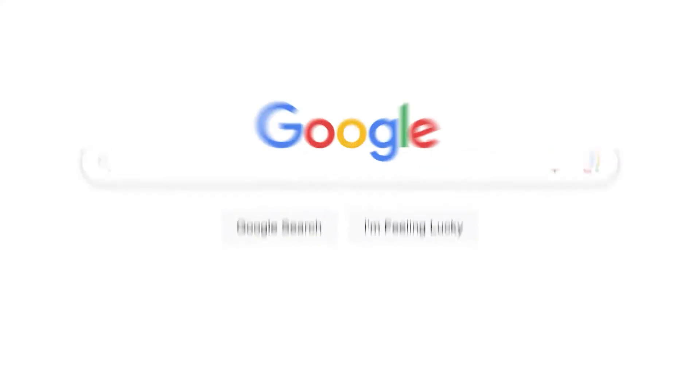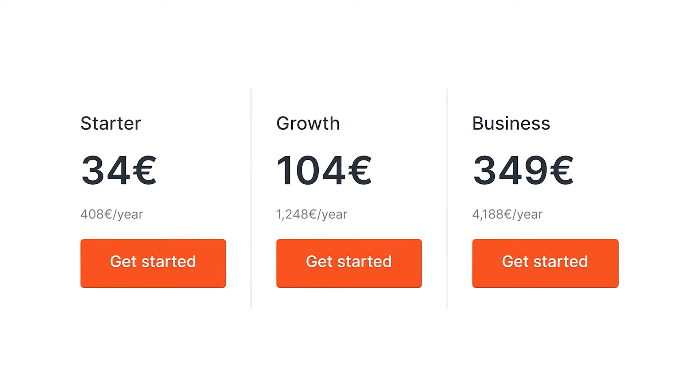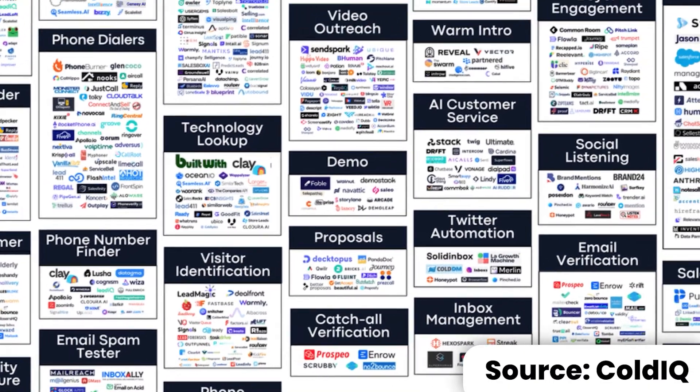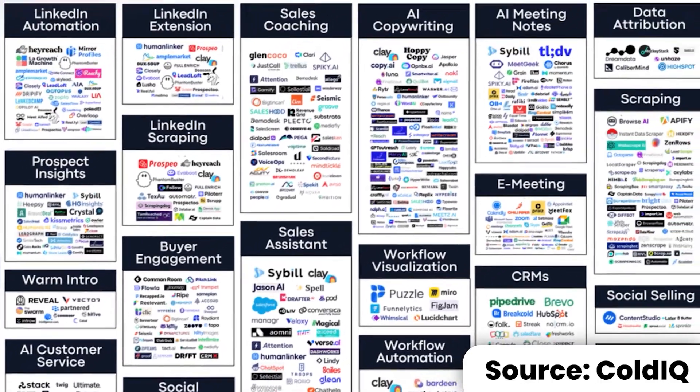Growing your business can be hard. To get new customers, you have to manually research your prospects or dish out for hefty annual contracts to data providers. While the boom of AI and automation tools have made it easier than ever to collect data and send messages, it's also created the new challenge of standing out in a sea of auto-generated spam and keeping track of your data across an ever-growing tech stack.